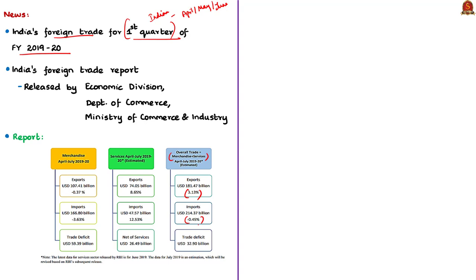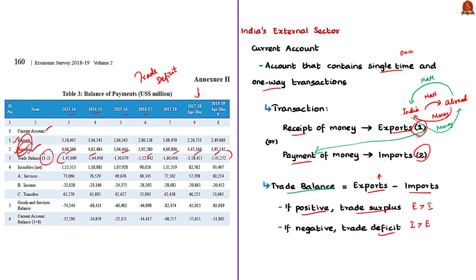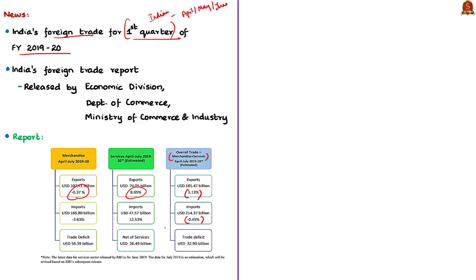Out of the 3.13% growth in exports, the contribution from the services sector is more — around 8.65% — whereas merchandise exports showed a negative growth of 0.37%. So only the services sector contributed to India's foreign trade especially in this period. In the balance of payments table in the economic survey, services come under the invisibles. Services is actually an invisible trade — travel costs, transportation costs, insurance costs, information technology services, IT-enabled services, communication services, financial services, etc.